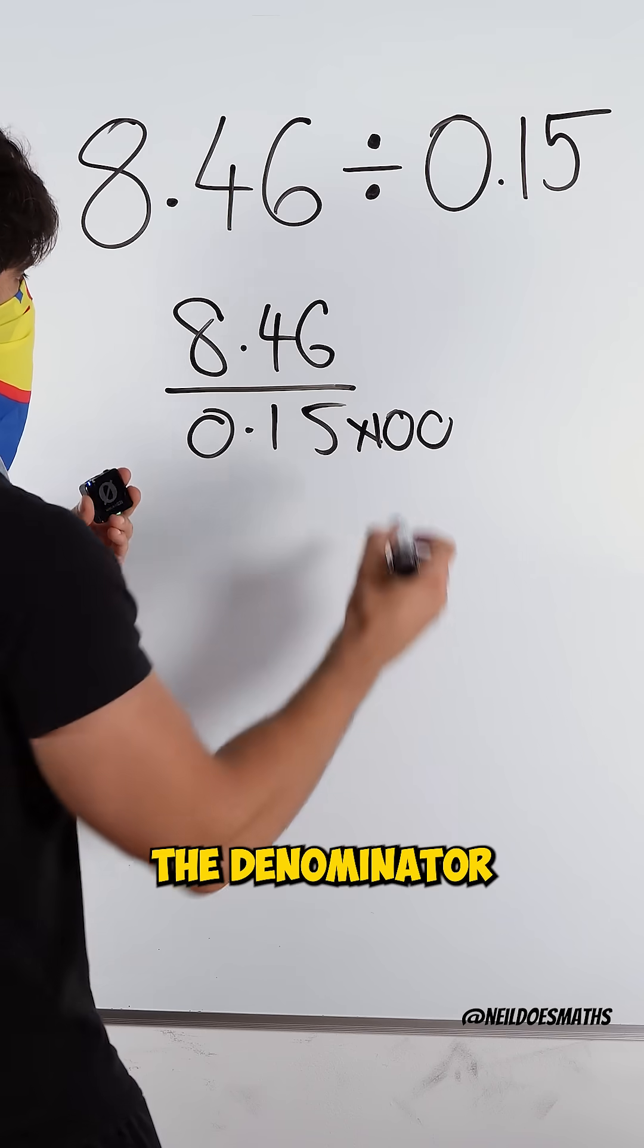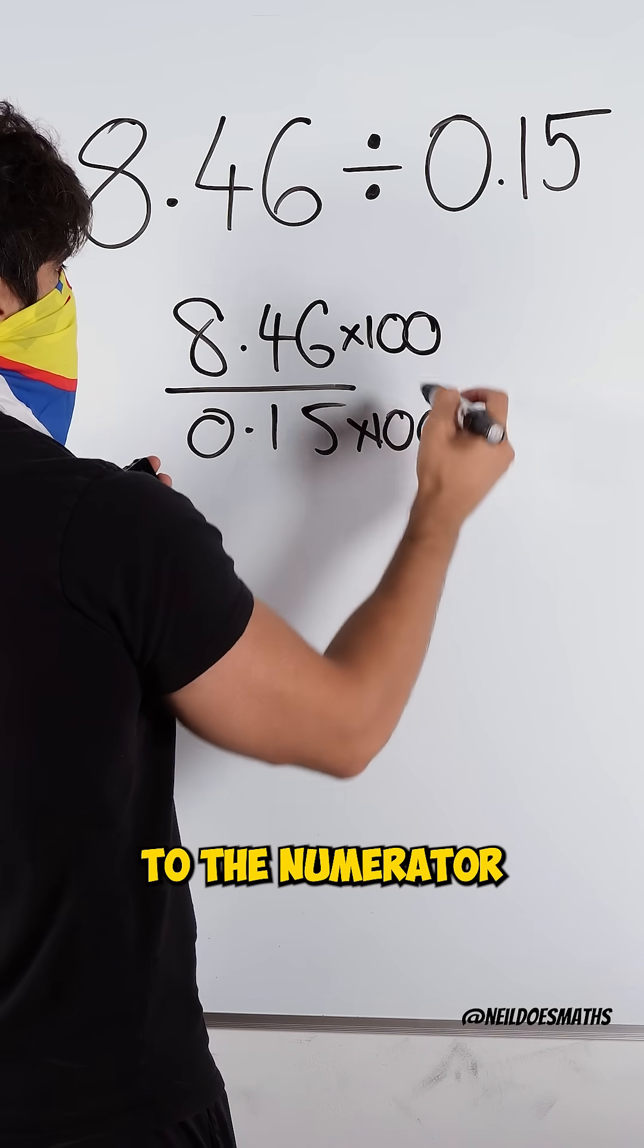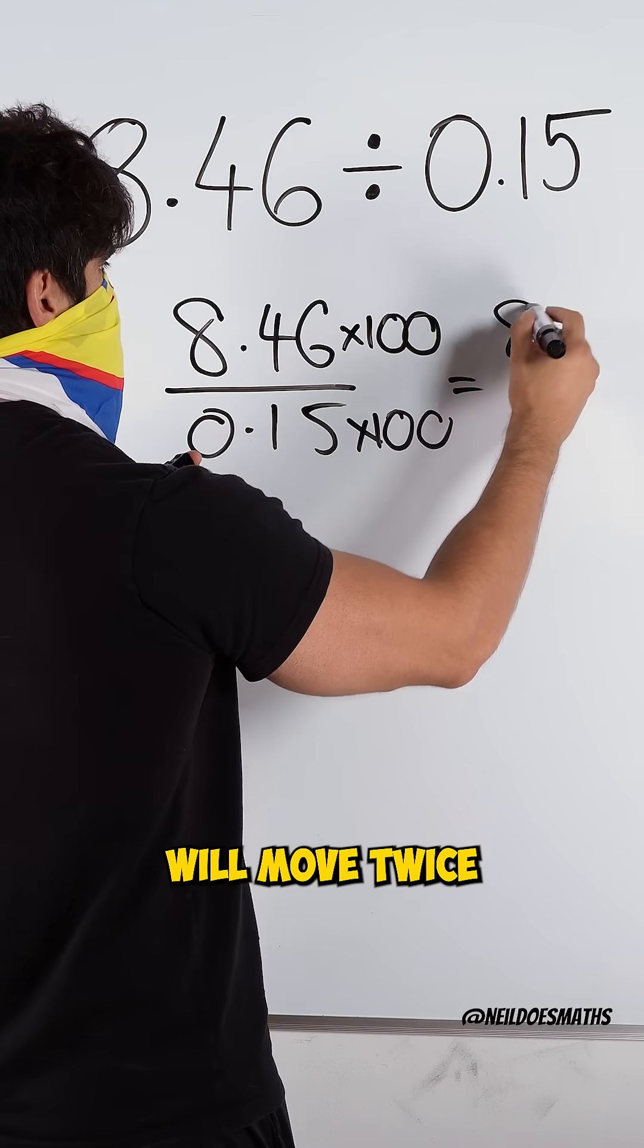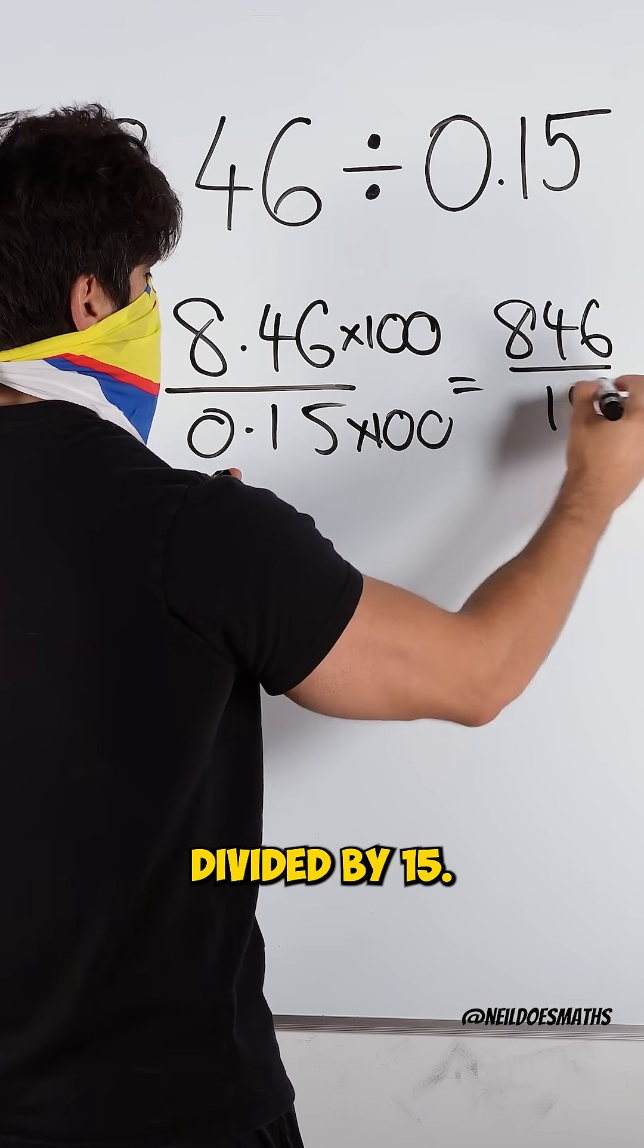But I can't just multiply the denominator by 100. I need to do it to the numerator as well. And when we multiply both numbers by 100, the decimal place will move twice. 8.46 divided by 15.